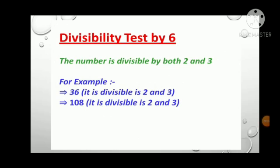Now children, let's learn some more tests of divisibility. Test of divisibility by 6. If a given number is divisible by 2 as well as 3, then the number is divisible by 6. For example, 36 is divisible by 2 as well as 3, so 36 is also divisible by 6. One more example: 108 is divisible by 2 as well as 3, so 108 is also divisible by 6. This is the test of 6.